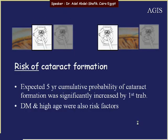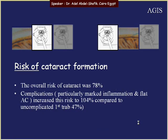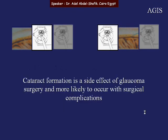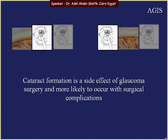Another finding concerns cataract formation risk. The expected five-year cumulative probability of cataract formation was significantly increased by the first trabeculectomy; diabetes and old age were also risk factors. The overall risk of cataract was 78%. Complications — particularly marked inflammation and flat anterior chamber — increased this risk to 104%, compared to 47% for uncomplicated first trabeculectomy. Cataract formation is a known side effect of glaucoma surgery, more likely when surgical complications are encountered.